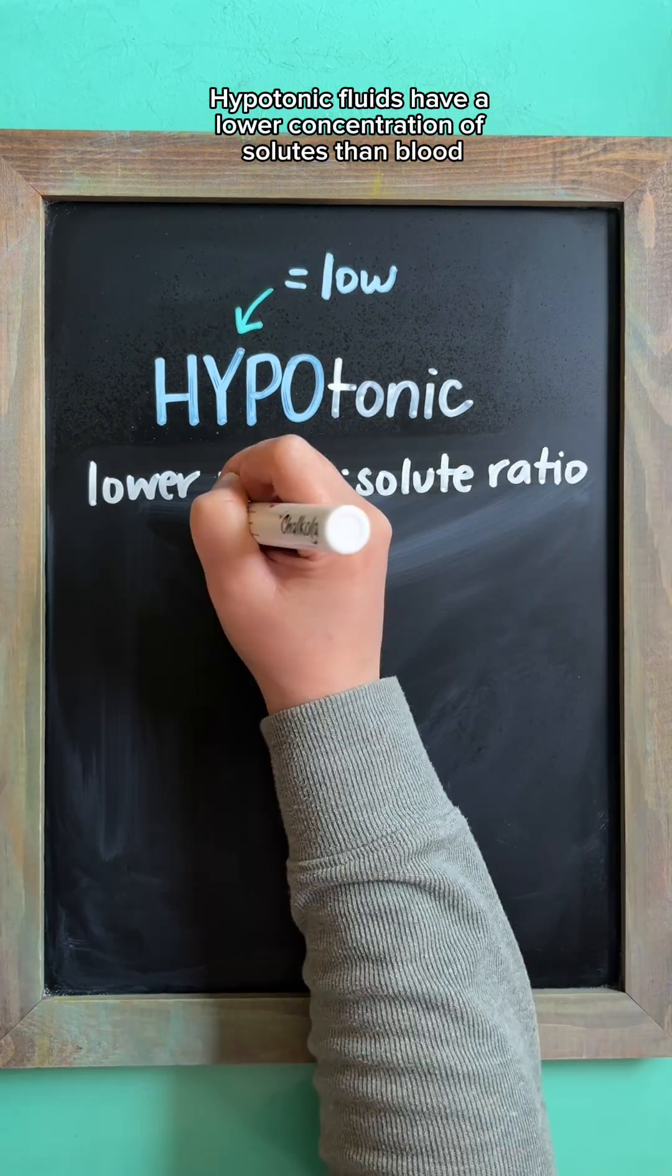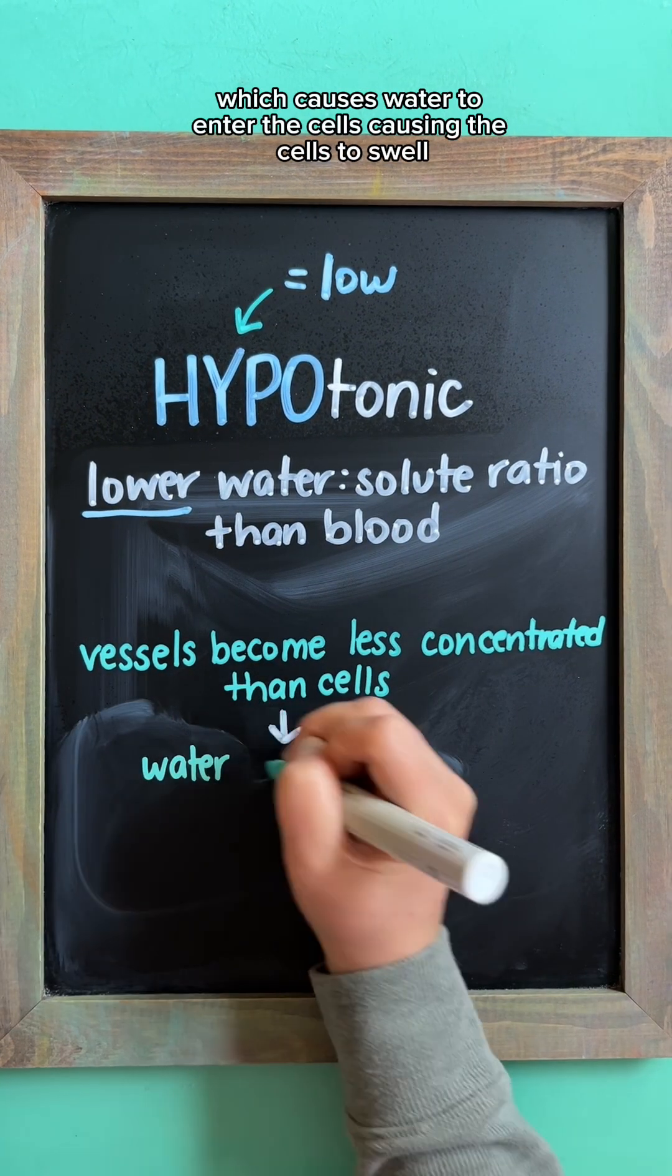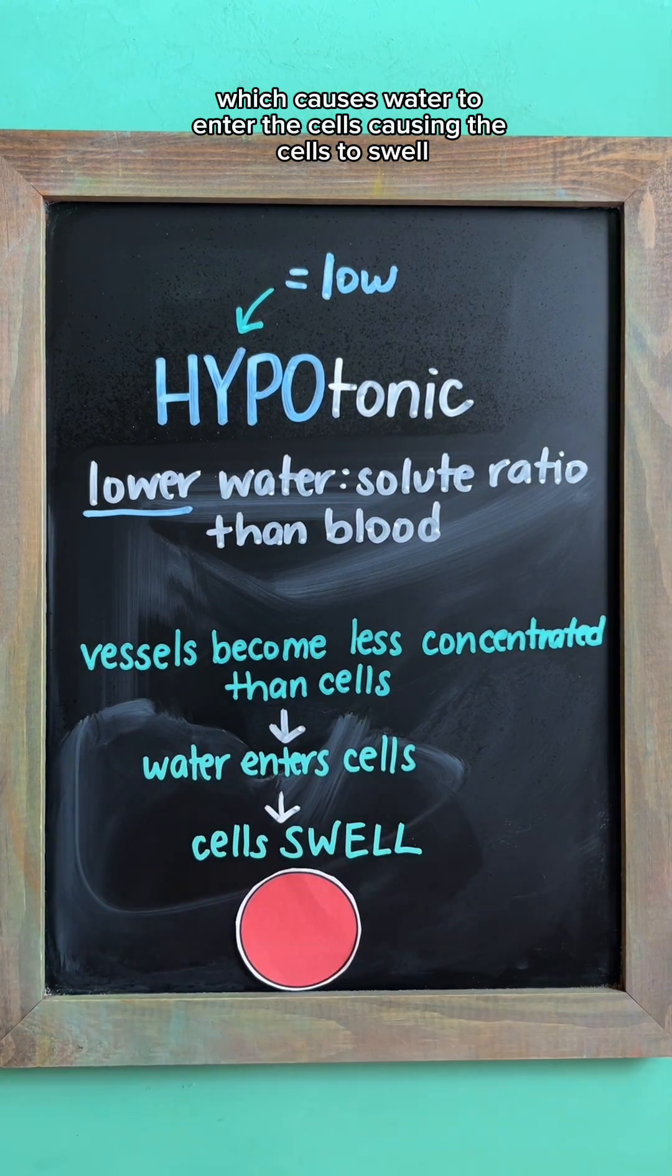Hypotonic fluids have a lower concentration of solutes than blood. This causes the vessels to become less concentrated than the cells, which causes water to enter the cells, causing the cells to swell.